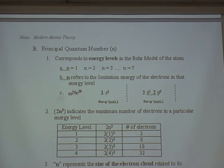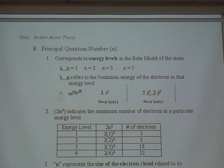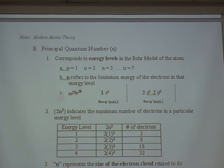The first quantum number in the modern atomic theory is called the principal quantum number, designated with the letter N. It corresponds to the energy levels in the Bohr model of the atom — these are the rows on the periodic table. There are seven rows on the periodic table. The first row, with hydrogen and helium, is N equals 1. Lithium to neon is N equals 2, and so forth.